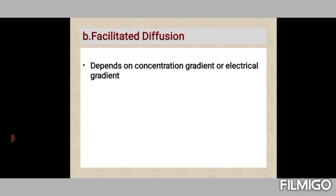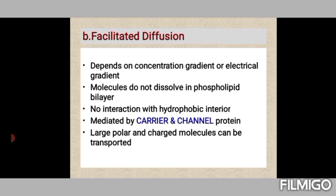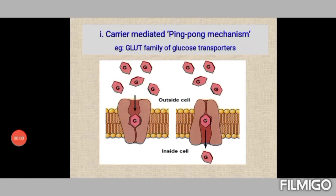Facilitated diffusion depends on a concentration gradient or electrical gradient and involves transport proteins called carriers or channels. Carriers transport the molecule to the opposite side, while channels act like tunnels through which molecules can pass under certain conditions. This does not involve molecules dissolving in the hydrophobic core. Larger polar and charged molecules can also be transported. Carrier-mediated facilitated diffusion is described as a ping-pong mechanism because carriers exist in two different structural conformations.